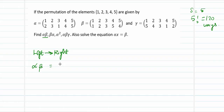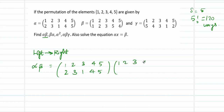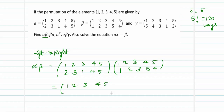Alpha will be rewritten as (1, 2, 3, 4, 5) mapping to (2, 3, 1, 4, 5), followed by beta which takes (1, 2, 3, 4, 5) to (1, 2, 3, 5, 4). The combination will also have domain (1, 2, 3, 4, 5). We will see what the resulting arrangement is going to be.